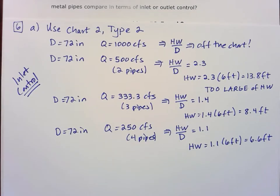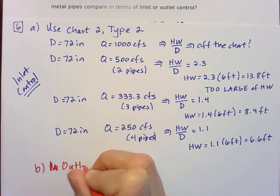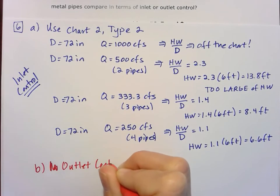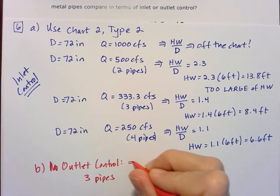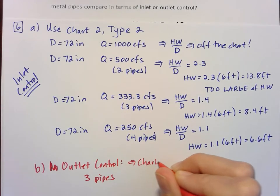Okay, well, if it's inlet controlled, if it's four pipes, we know that it would be this 6.6 feet. If it's three pipes, we know it would be the 8.4. So let's check both of those with inlet control. I'm sorry, outlet control. We already did inlet control. Outlet control. So for the three pipes, we can grab that on our chart 9. So this would be chart 9 for this example.